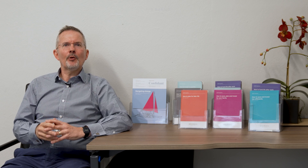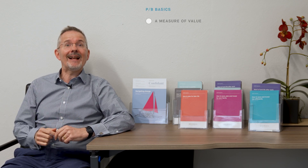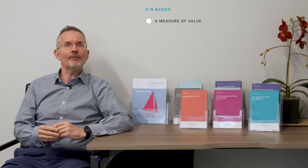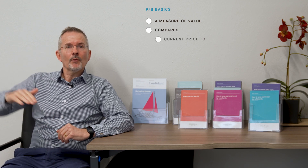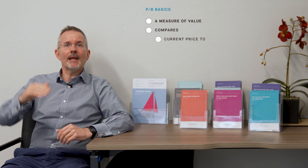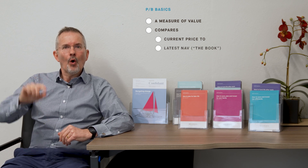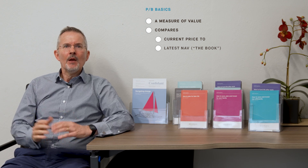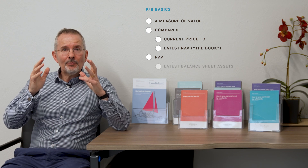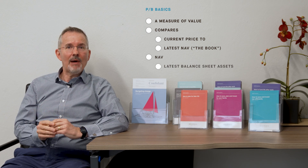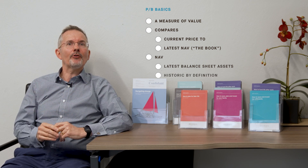So what is a price-to-book ratio? The name is almost as it describes — it's a measure of value, of cheapness or expensiveness. Unlike the PE ratio, this one compares the current price or market capitalisation of the company to the latest book value per share, total book value, or total net asset value. That net asset value is basically the latest balance sheet asset number, usually done on a historic basis, so it's out of date almost the moment it's done.